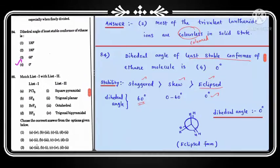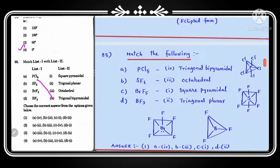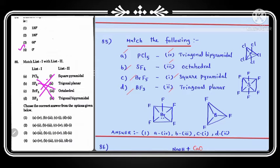Question number 85 is a match type: molecules matched with their geometry. PCl₅ (phosphorus pentachloride) has trigonal bipyramidal structure. SF₆ (sulfur hexafluoride, AB₆ type) has octahedral shape. BrF₅ has square pyramidal shape. BF₃ (boron trifluoride, AB₃ type) has trigonal planar structure. Matching: A→4, B→3, C→1, D→2. Option 1 is the correct answer.